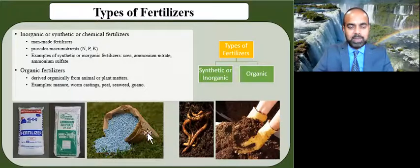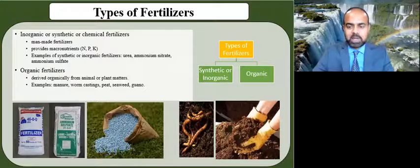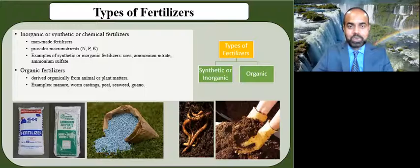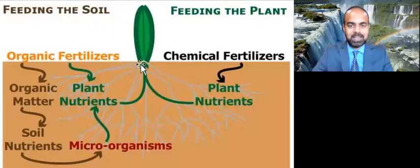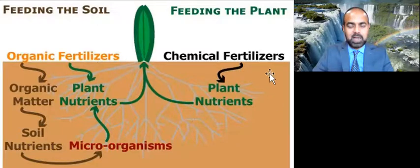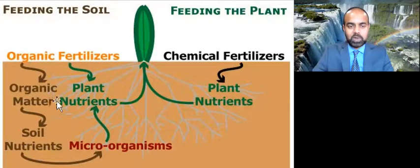On the other hand, organic fertilizers are derived organically from animal or plant matter. Examples include manure, slurry, worm castings, peat, seaweed, humic acid, and guano, to name a few. These are enriched with both macronutrients and micronutrients that plants need.